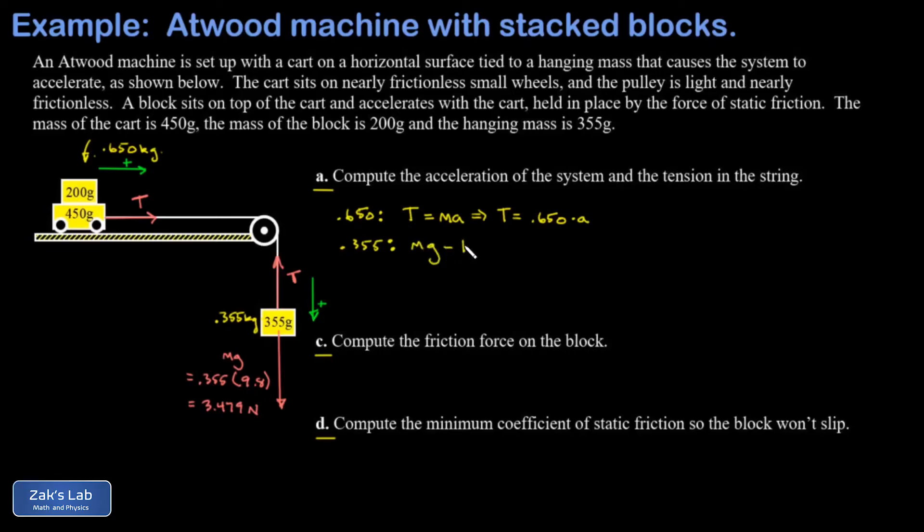And I know the actual acceleration is downward. So mg counts as a positive, and the T will count as a negative. That's pointed in the negative direction. And that's equal to the size of that mass multiplied by its acceleration. So I plug in the numbers, and I have 3.479 Newtons pointed down minus a T pointed up.